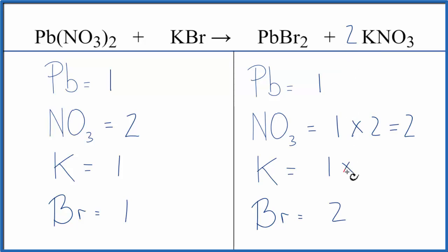One times two for the potassium, and now we have two potassiums. Why don't we just balance the potassium? We have two here, one here. Coefficient of two. One times two, that's two. So the potassium's balanced.